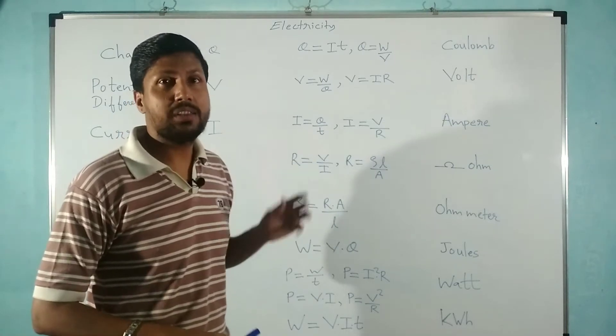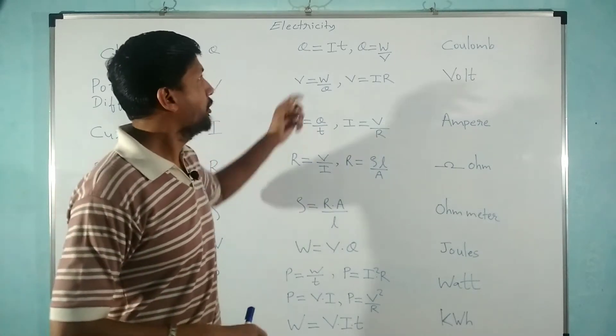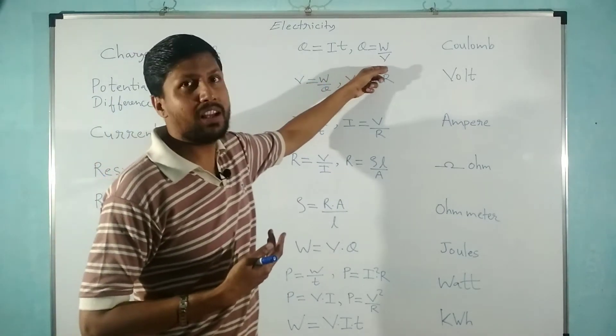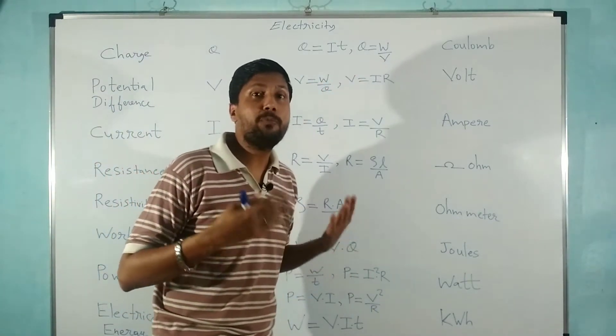If we do mathematical jugglery, we get the charge formula Q equals IT, obtained from the formula of potential difference V equals W by Q.